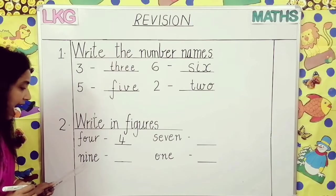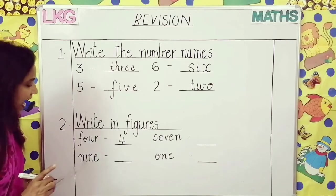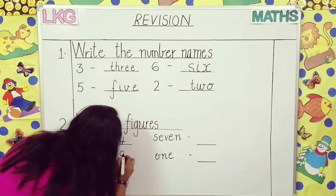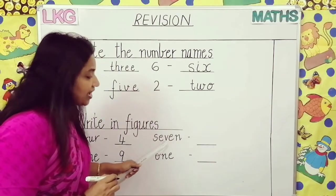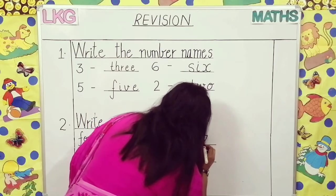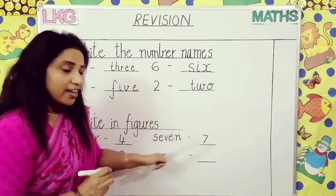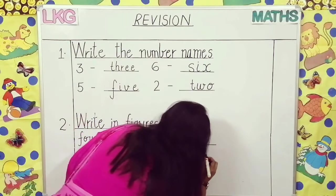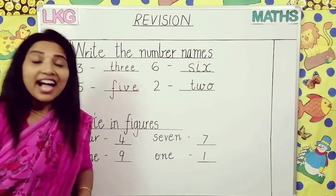The next name is N-I-N-E. What is this? Nine. So we will write nine. What is this, children? S-E-V-E-N. Seven. We will write seven. What is this, children? O-N-E. One. So you have to revise these topics.